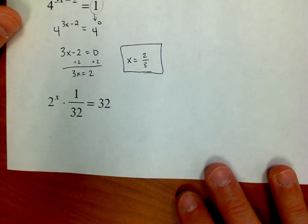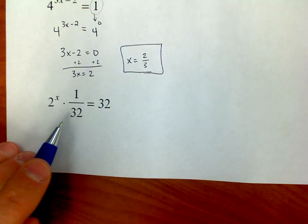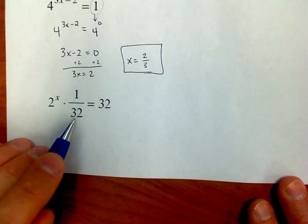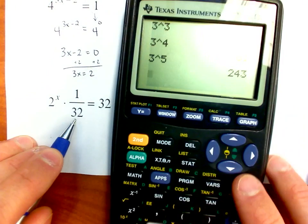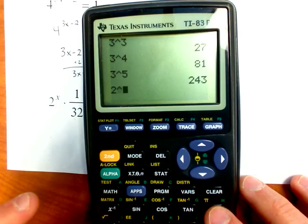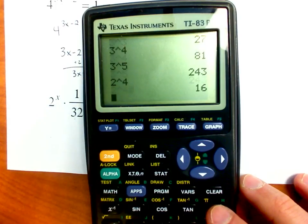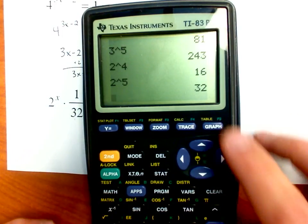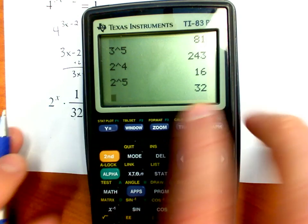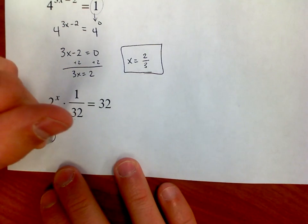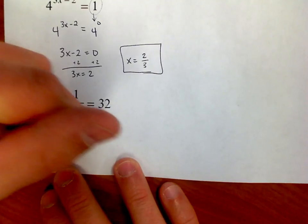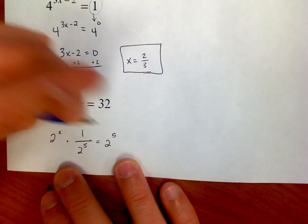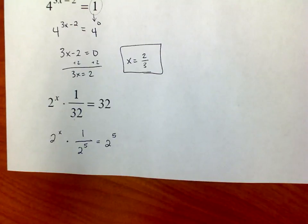Last problem. What do I do whenever I have fractions? First things first, let's look and see. This is 2 raised to a power, so it would be really nice if I could make this a 2 raised to the power. So let's go through and figure out exactly what that is. 2 raised to the 4th power? Nope. 2 raised to the 5th power? Aha. That's 2 raised to the 5th power. So let's write it like this. 2 to the x times 1 over 2 to the 5th is equal to 2 to the 5th. So I just replaced 32 with 2 to the 5th power.